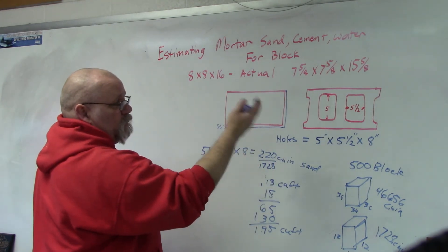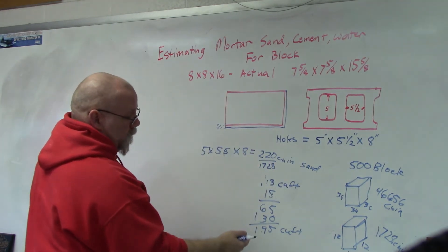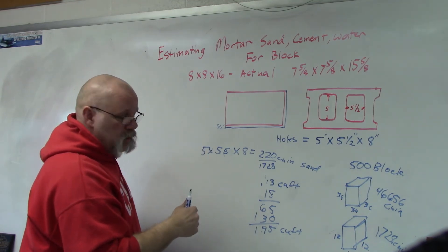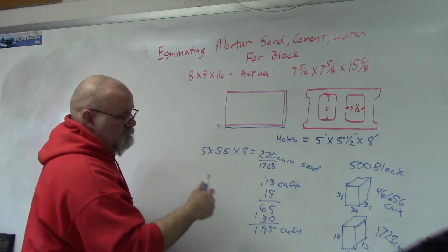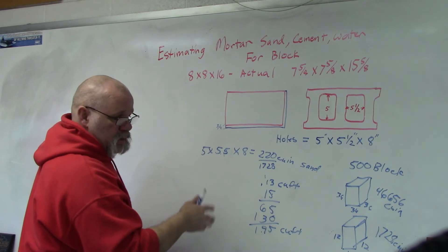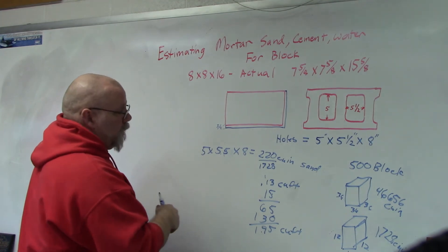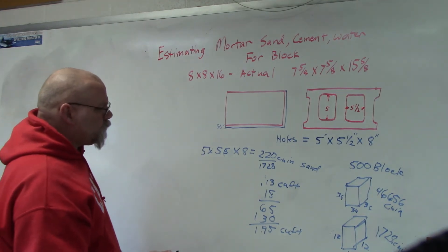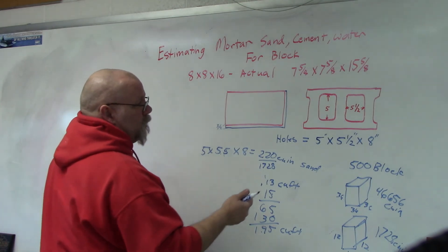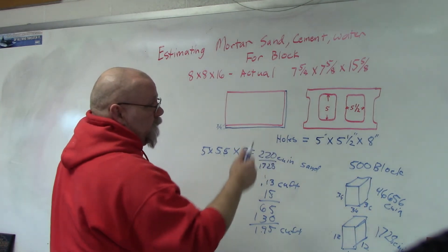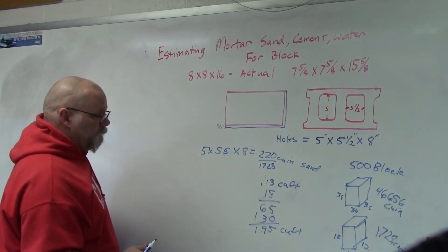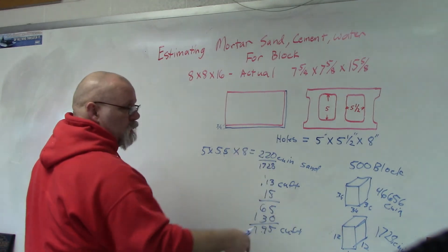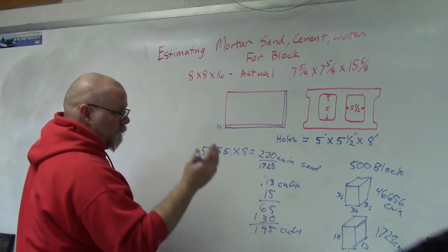If you did it every fourth block, you would multiply by how many times that's going to occur in the length of your wall. Then you'd take a piece of rebar and stick it down in there. So it's 1.9 cubic feet per column — figure out how many columns.